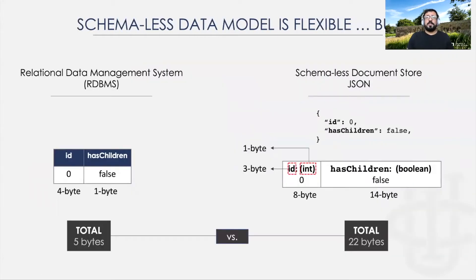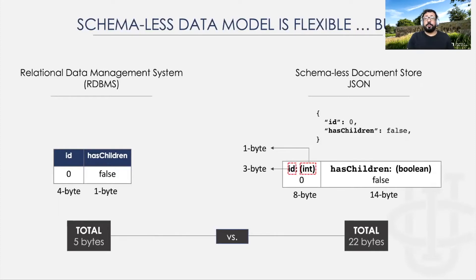The flexibility of a schema-less store is not free, however. In this example, we store the same data using a schema-less JSON data model and a relational data model. The JSON record here is four times larger than the relational record.